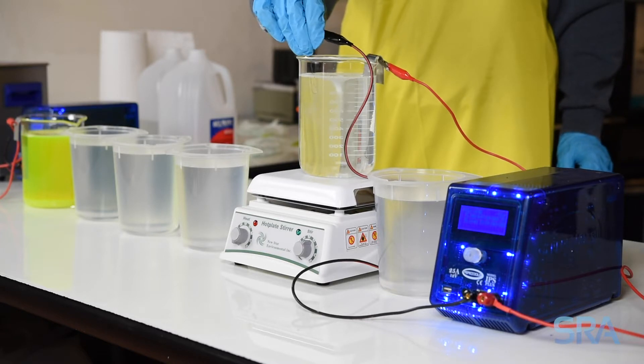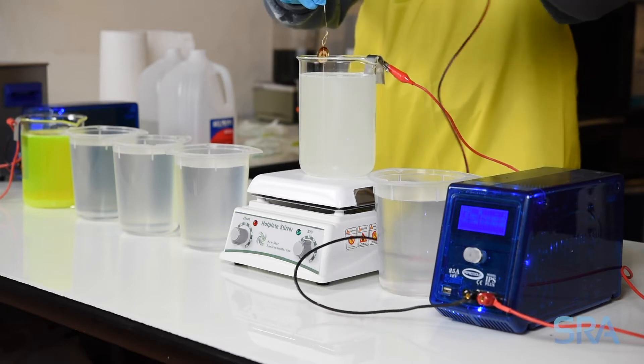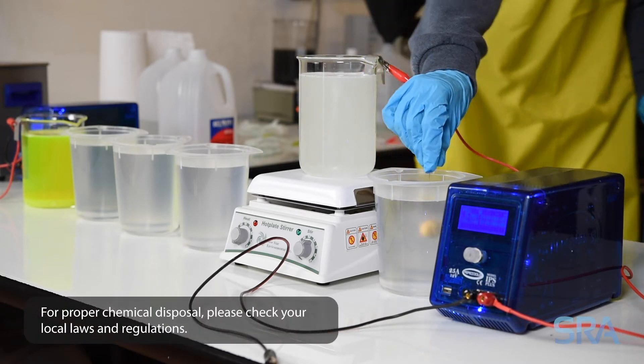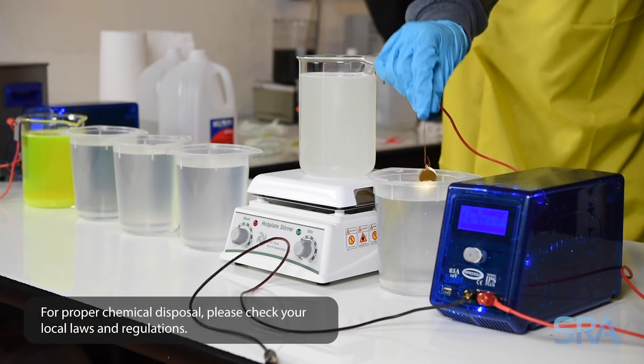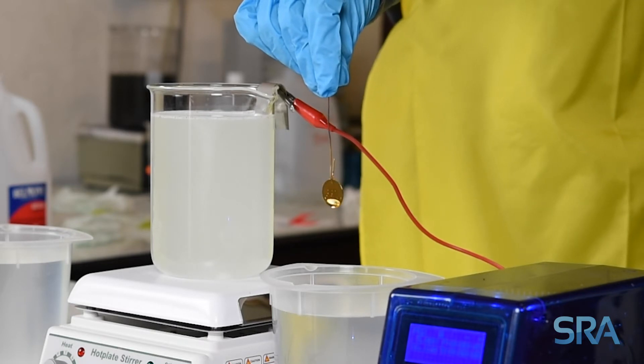Make sure to visually inspect the item throughout the plating process. When the desired color is achieved, finish with the distilled water rinse. Well, there you have it—a perfect 24 karat gold plate.